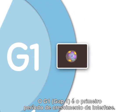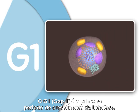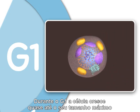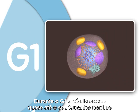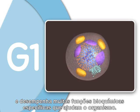G1, or Gap 1, is the first growth stage of interphase. In G1, the cell grows to nearly its full size and performs many of its specific biochemical functions that aid the organism.